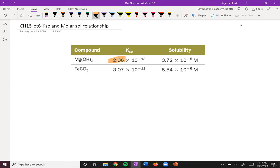We can see that this one right here has a smaller KSP than the iron carbonate. One is smaller than the other. And so you may predict that it has a smaller solubility. But if we look at the solubility values, we see that that's wrong. The molar solubility of magnesium hydroxide is actually higher.